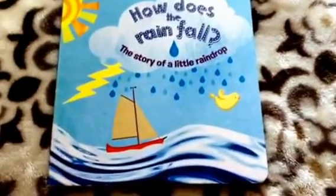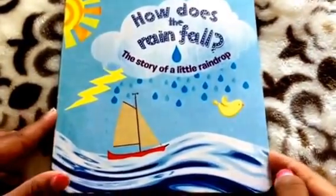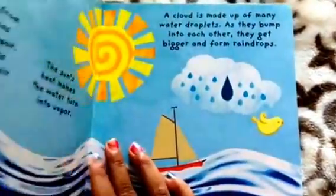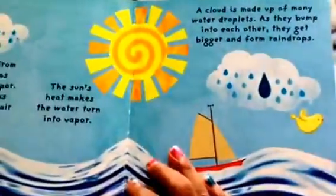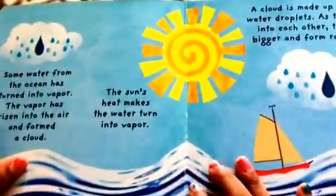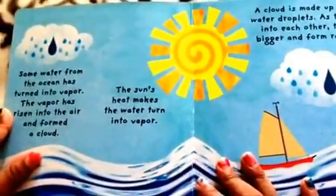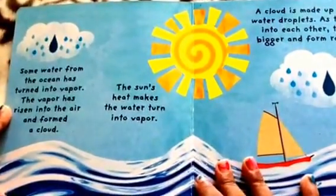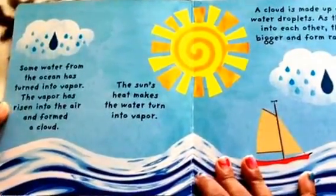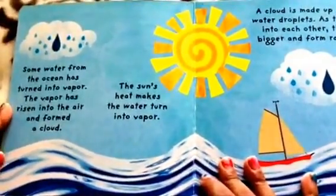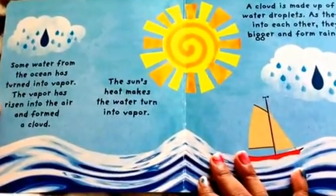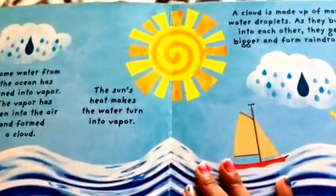How does the rainfall? The story of a little raindrop. Some water from the ocean has turned into vapor. The vapor has risen into the air and formed a cloud. The sun's heat makes the water turn into vapor.